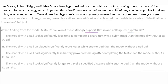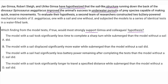The hypothesis is that the sail-like structure improved success in underwater pursuits of prey species capable of making quick evasive movements. So I've got in my head: improved success in underwater pursuits, and specifically quick evasive movements. Now I'll go through and eliminate answers that do not match that idea. A: the model with a sail took significantly less time to complete a sharp turn while submerged than the model without a sail. A quick turn would be important for chasing after something with quick evasive movements, and we know the sail should help with that. So A actually makes sense — I'm going to keep A.